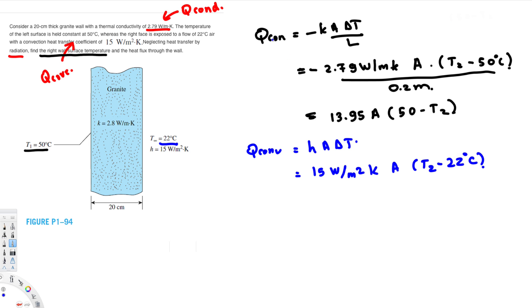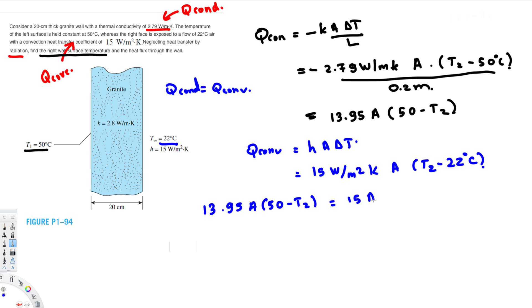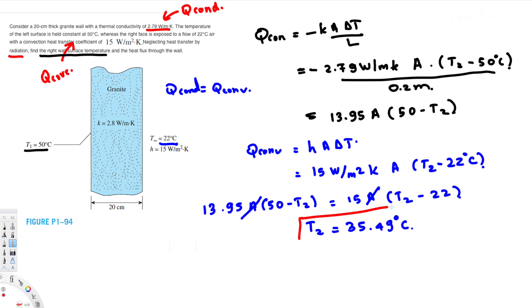Since this heat transfer is in series, Q conduction and Q convection are equal. The area cancels from both sides, giving us: 13.95 times (50 minus T2) equals 15 times (T2 minus 22). Solving for T2 gives 35.49 degrees Celsius. This answers the first question — the right wall surface temperature is 35.49 degrees Celsius.